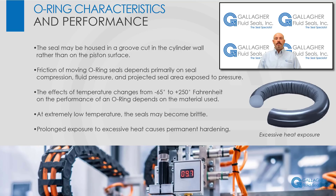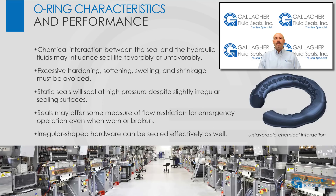The effects of temperature changes on O-ring performance depend on the material used. Synthetic rubber can be made for continual use at high or low temperatures. At extremely low temperatures, seals may become brittle but will resume their normal flexibility without harm when warmed. Prolonged exposure to excessive heat causes permanent hardening and will render the seal useless. Chemical interaction between the seal and the hydraulic fluid may influence seal life favorably or unfavorably depending on the combination of seal material and fluid. Excessive hardening, softening, swelling, and shrinkage must be avoided.